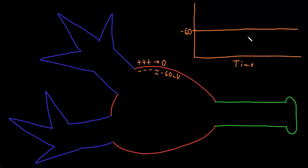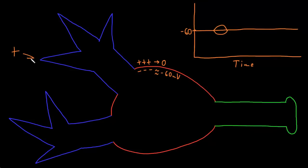Inputs from certain types of stimuli may increase or decrease the membrane potential of the neuron a small amount for a brief time before it returns back to the resting potential. These transient membrane potential changes are called graded potentials. They tend to occur in the dendrites and the soma, and their size and duration are determined by the size and duration of inputs — both excitatory and inhibitory.